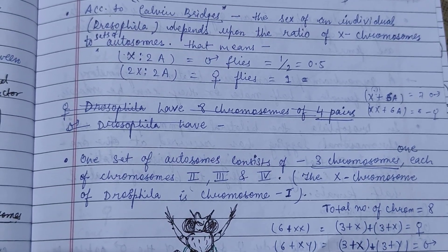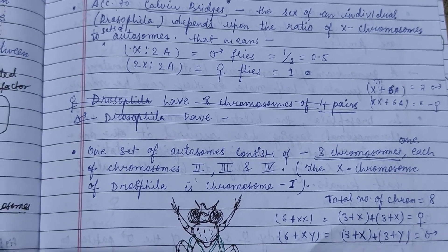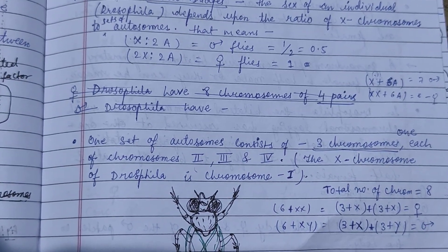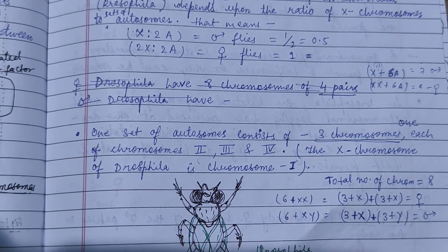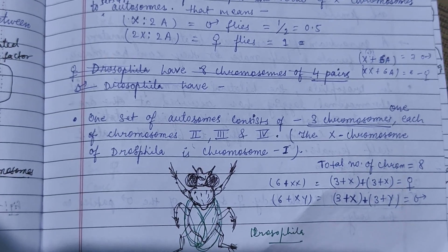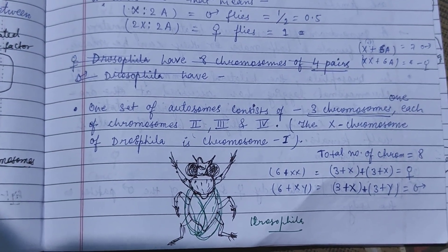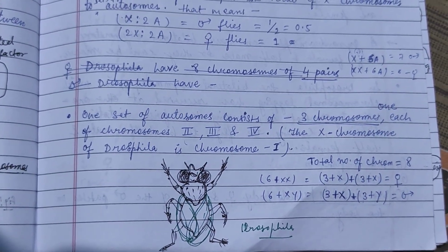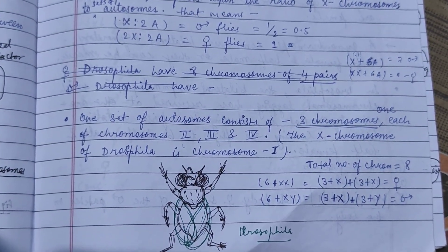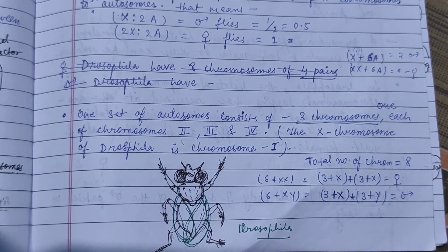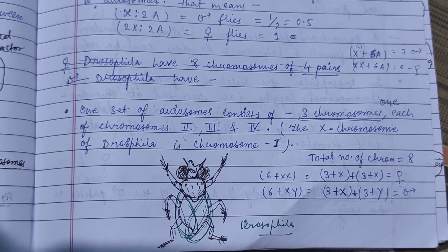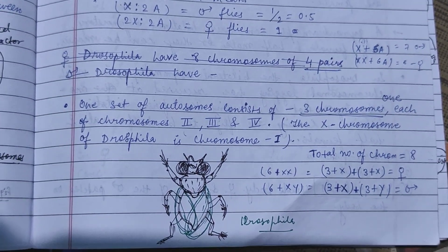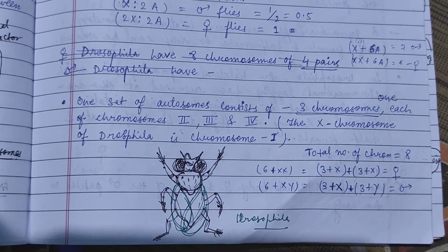The X to A ratio — where A represents the autosome — when it is 0.5, it regards to male flies, and when it is 1, it forms female flies. One set of autosomes consists of three chromosomes, one each of chromosomes two, three, and four. The sex chromosome in Drosophila is chromosome one.